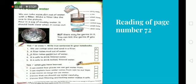Now come to the page number 72. We can take some dirt out of water with a filter. Make a filter like the one in the picture. Pour in a jug of muddy water. It should look clear when it comes out. But there may be germs in it. You can kill the germs if you boil it. Tick or cross. Write true sentences in your notebooks. Now look at this.